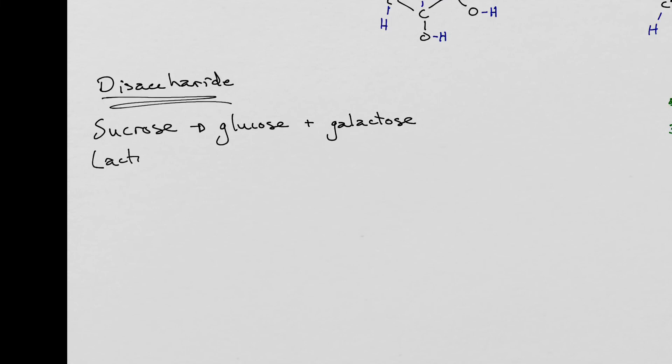There is lactose. Lactose is a glucose monosaccharide combined using an enzyme through a condensation reaction with a galactose molecule. Then there's also maltose. Maltose is when you take a glucose molecule and combine it using an enzyme through a condensation reaction with another glucose molecule.